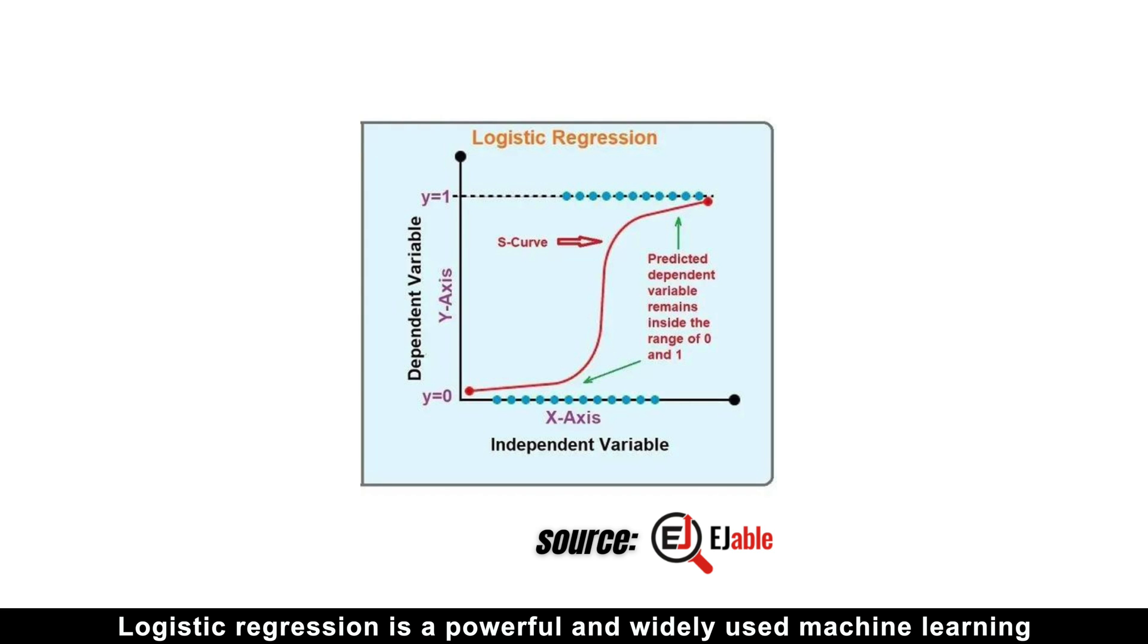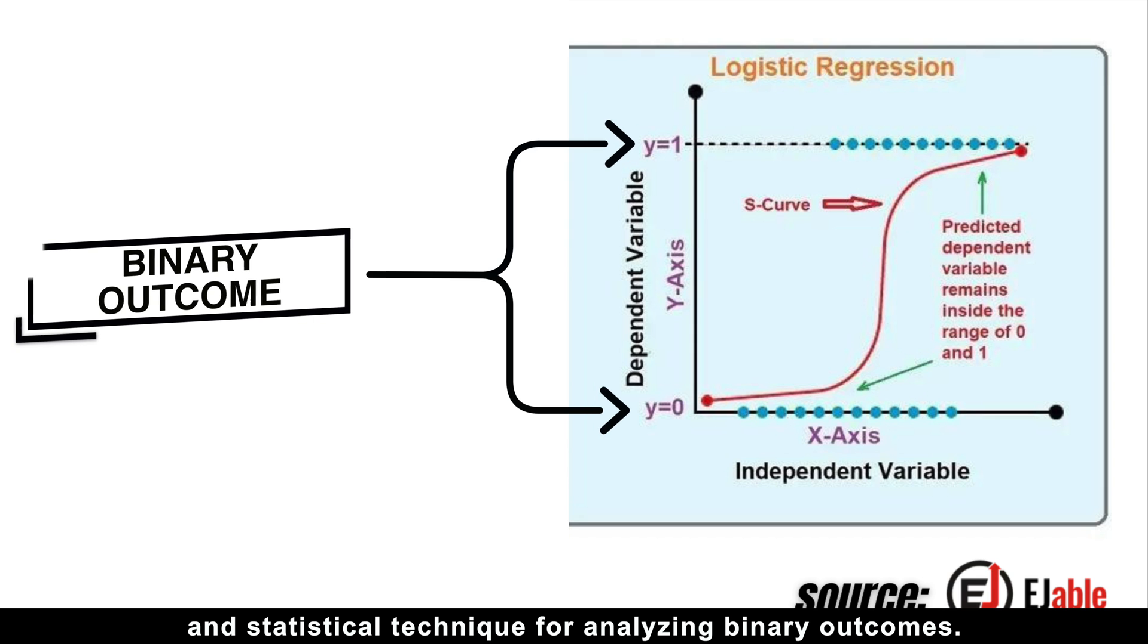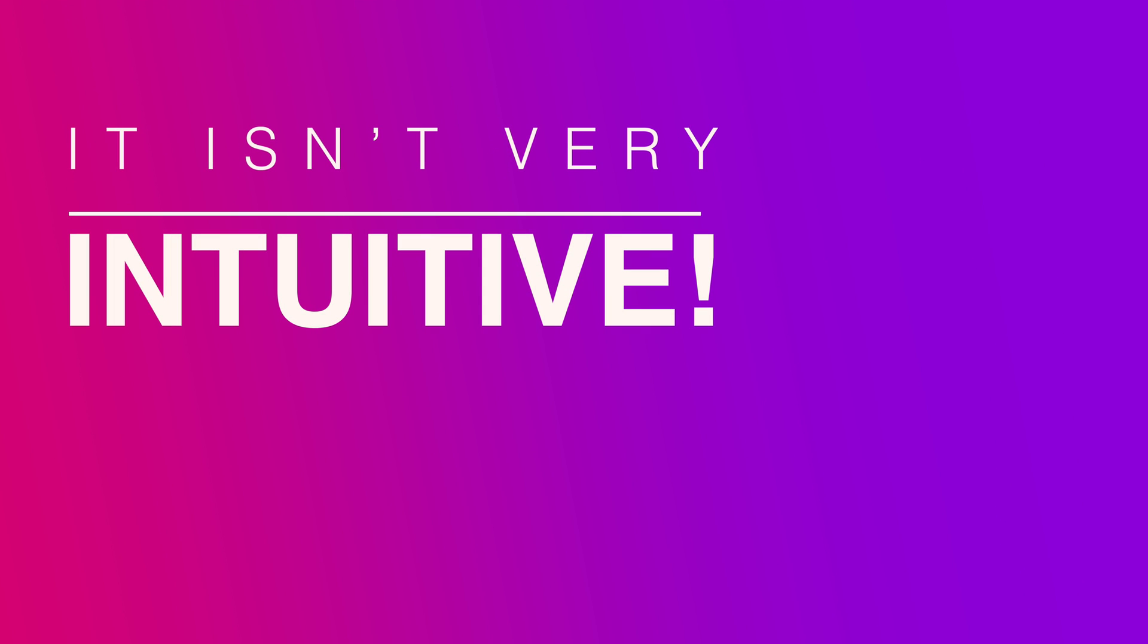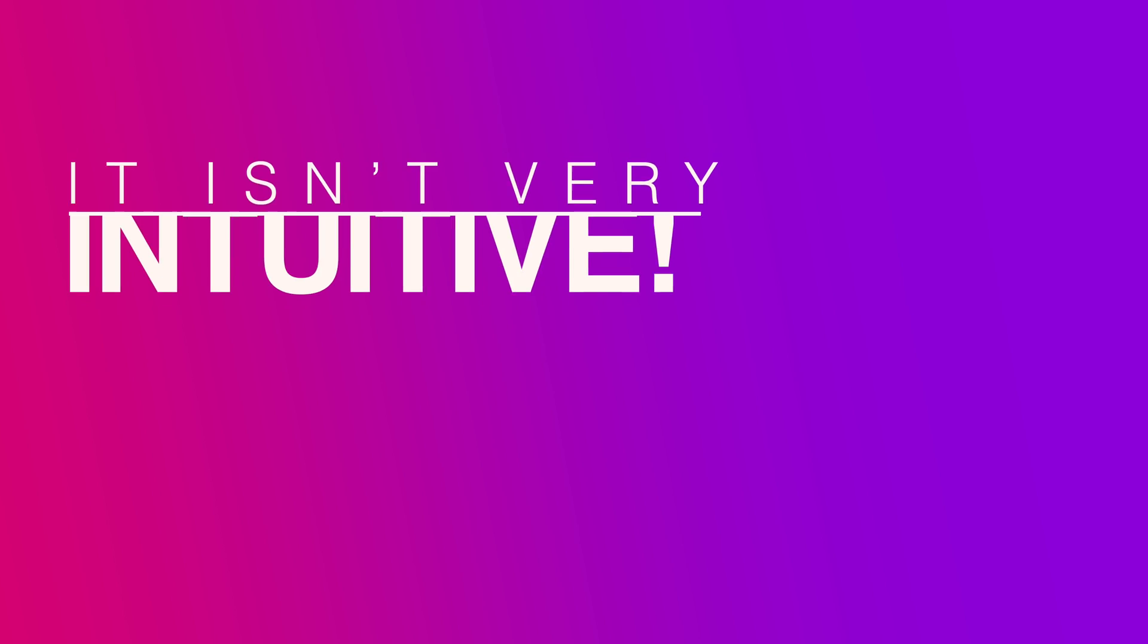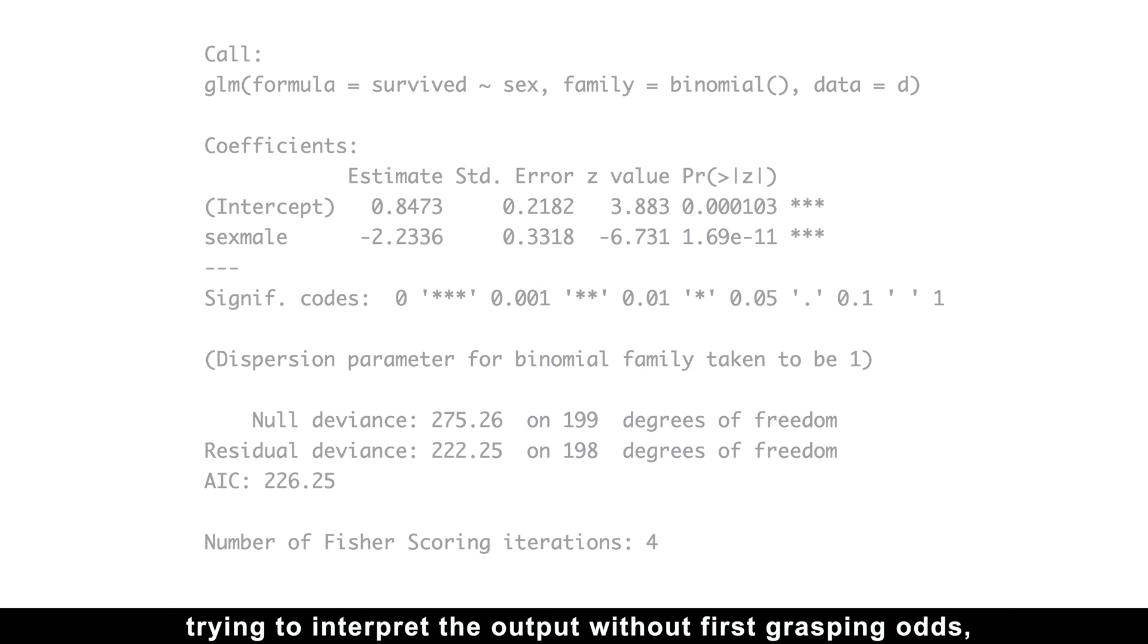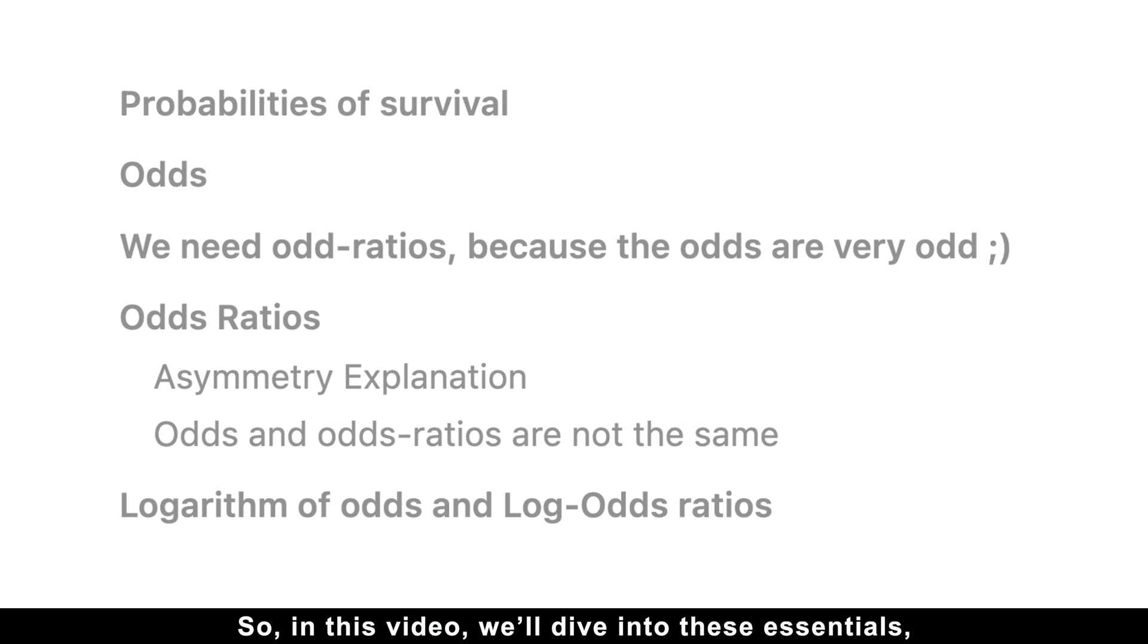Logistic regression is a powerful and widely used machine learning and statistical technique for analyzing binary outcomes. However, it isn't very intuitive. Personally, I wasted a lot of time trying to interpret the output of logistic regression without first grasping odds, odds ratios, and probabilities, the fundamental building blocks of logistic regression.